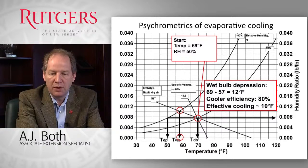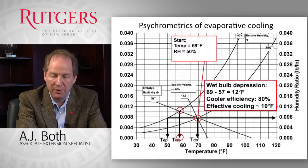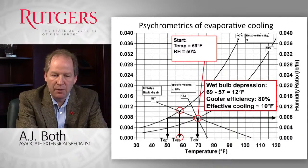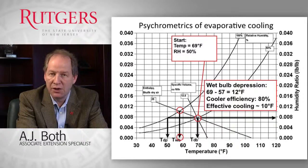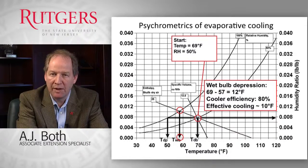One tool we use to evaluate how evaporative cooling systems work is the psychrometric chart. On the horizontal axis we look at temperature, and on the vertical axis we look at humidity ratio, which tells us how much water vapor is present in a quantity of dry air. In greenhouse environments we work with temperature and relative humidity to characterize air conditions, and the psychrometric chart allows us — by knowing two conditions such as relative humidity and temperature — to quickly identify other important conditions such as specific volume, enthalpy, wet bulb temperature, and dew point.